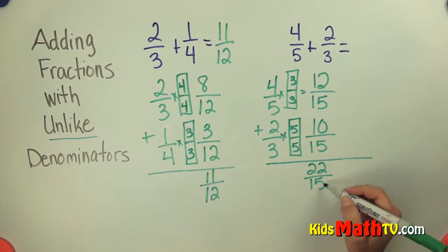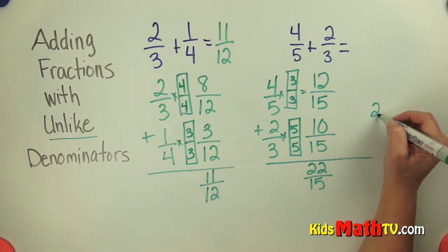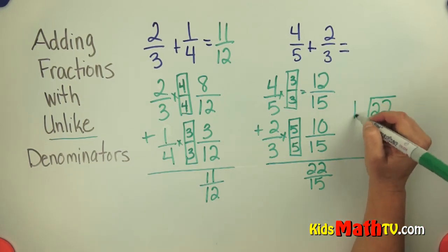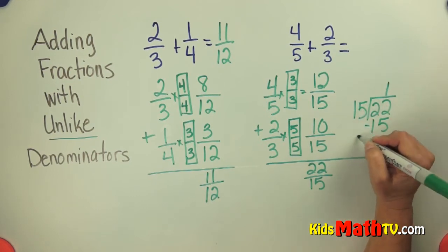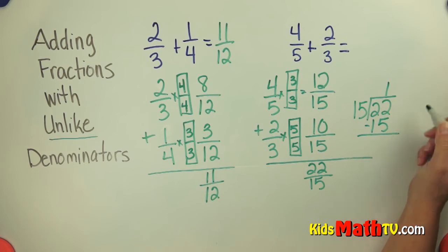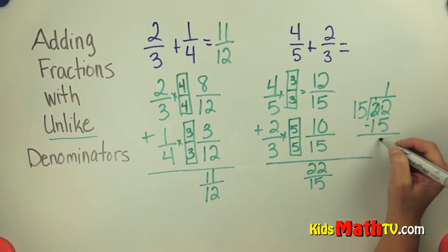So I'm going to make this improper fraction into a mixed number by simply dividing. 22 divided by 15. Looks like 1. Subtract. And I have to borrow. That's 7.